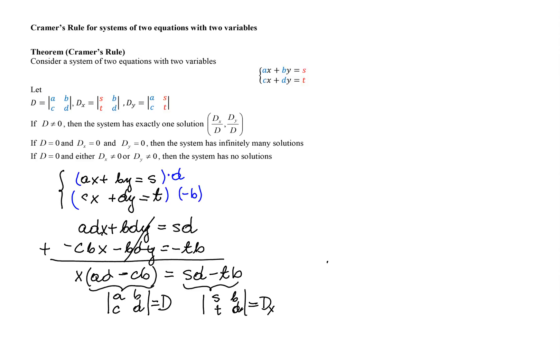Therefore, we have DX = D_X. If D is different from zero, we can divide by D to get X = D_X/D. That's one part of the solution, and Y can be found in a similar way.